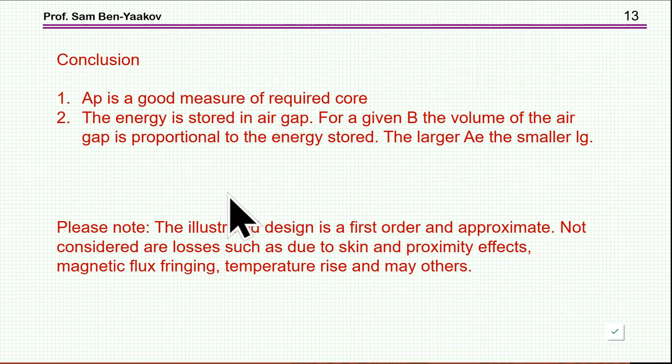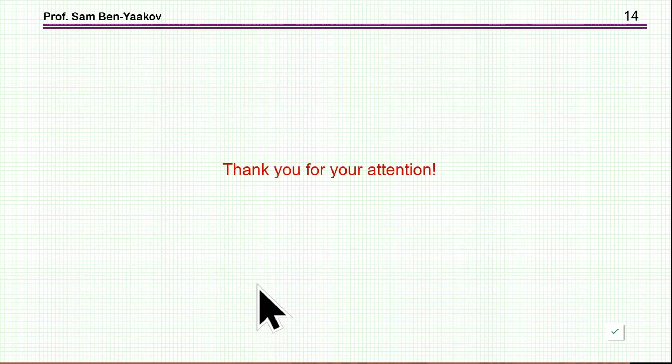So, let me just summarize what we have seen, that AP is a very good measure of required core. The energy is stored in the air gap, and for a given B, the volume of the air gap is proportional to the energy stored, which means that the larger the AE, the smaller the gap length. And please note that the illustrated design is in the first order and very approximate. Not included, as I've said, are losses at skin effect, proximity effect, fringing, temperature rise, and many other things that you have to take into consideration when you build a practical inductor. This is just the basic theoretical aspect of the design. So, this brings me to the end of this presentation. I hope you found it of interest, and perhaps it will be useful to you in the future. Thank you very much.